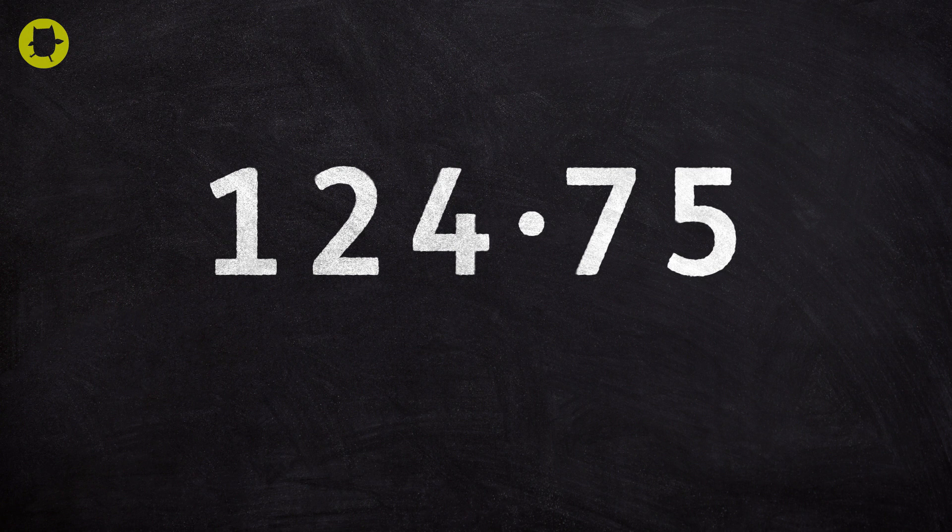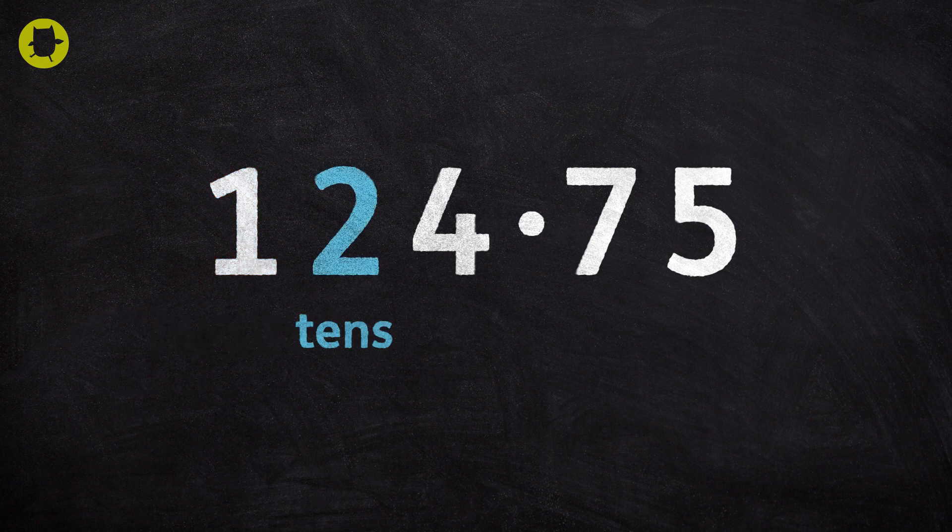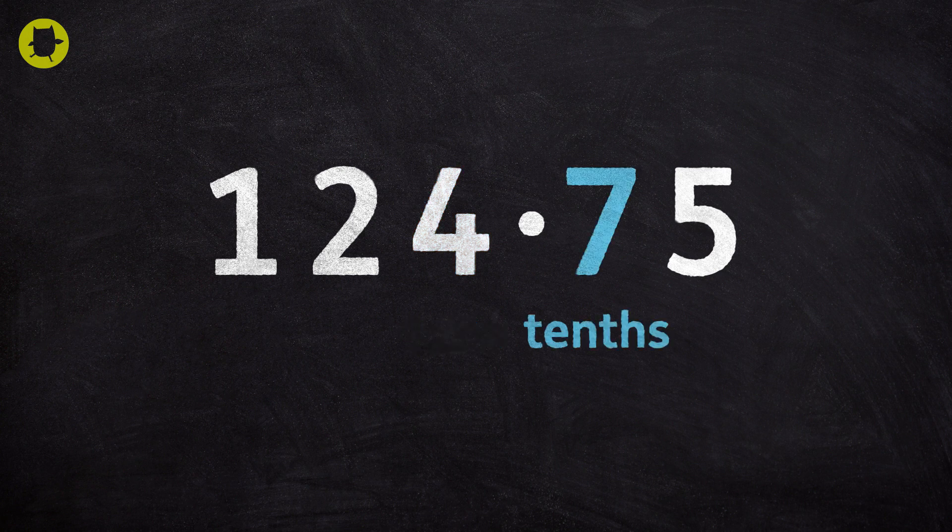This decimal number is made up of 100, 2 tens, 4 units or ones, 7 tenths, 5 hundredths.